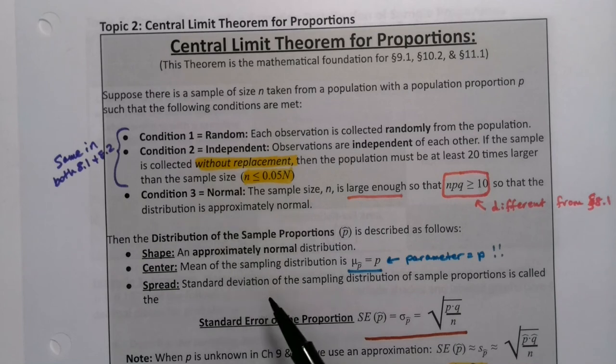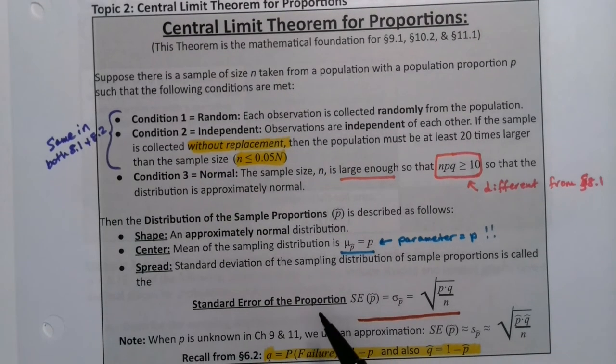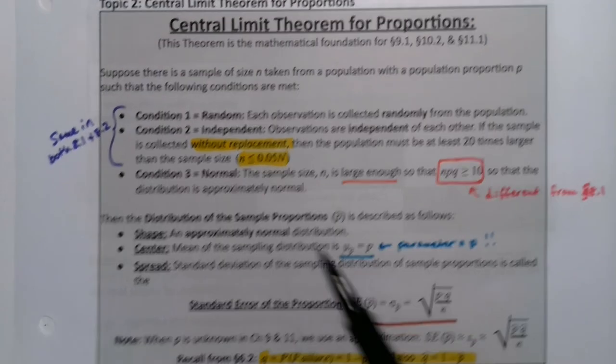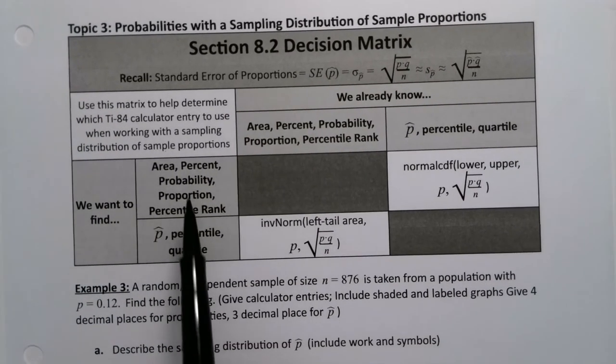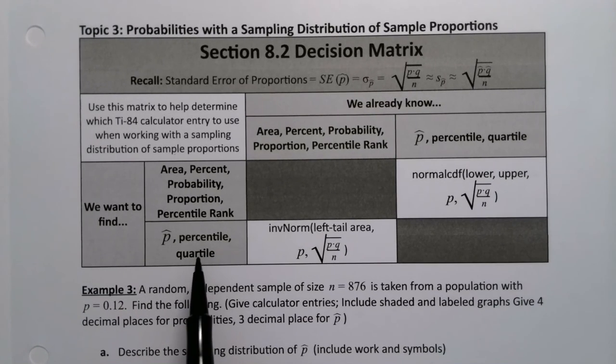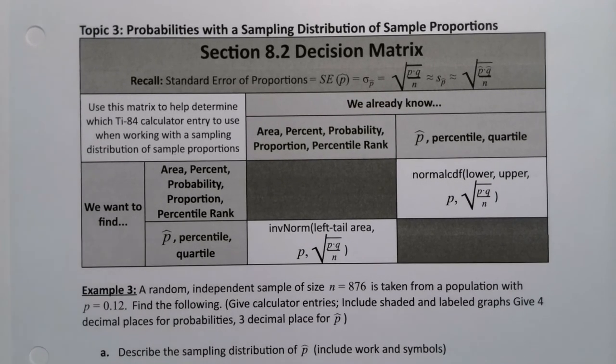If it's normal, we know shape, center, and spread will work out like we say here. That also means we could find probabilities and areas and percents, or we could find p-hats or percentiles and quartiles, just like we did in section 8.1. As per usual, we don't need to memorize this—it's on our exam notes packet.